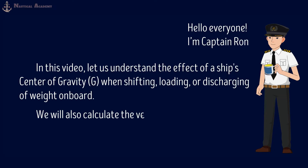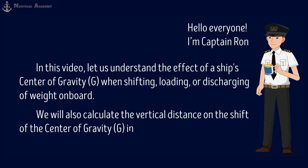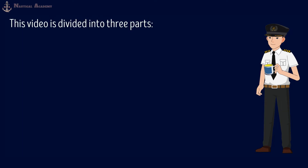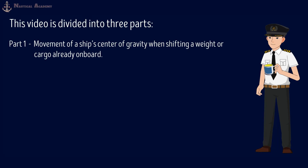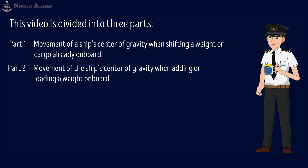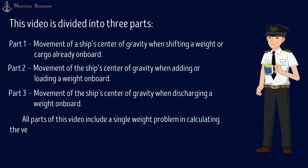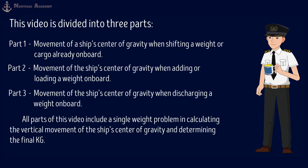We will also calculate the vertical distance on the shift of the center of gravity in order to determine the ship's final KG. This video is divided into three parts. Part 1 covers the movement of a ship's center of gravity when shifting a weight or cargo already on board. In Part 2, it covers the movement of the ship's center of gravity when adding or loading a weight on board. And in Part 3, covers the movement of the ship's center of gravity when discharging a weight on board. All parts include a single weight problem in calculating the vertical movement of the ship's center of gravity and determining the final KG. Kindly check the link in the description for Parts 2 and 3 of this video.